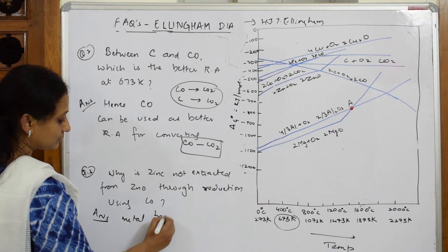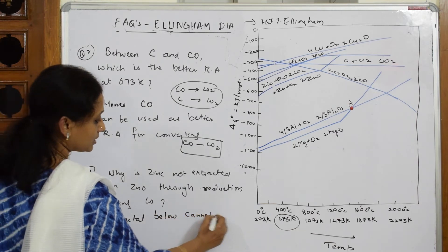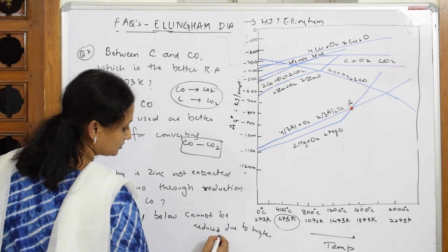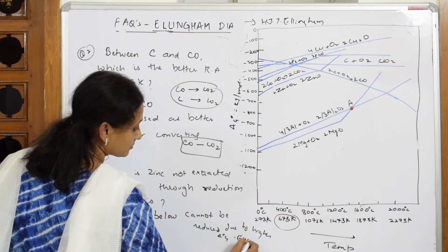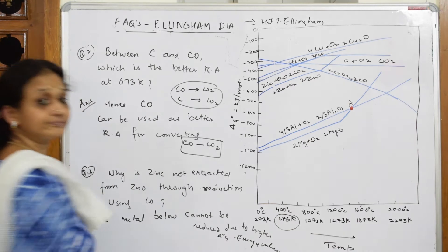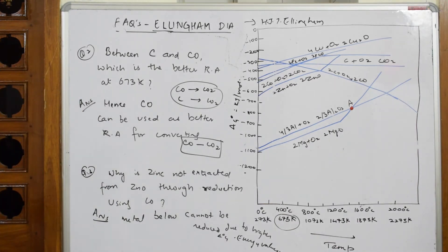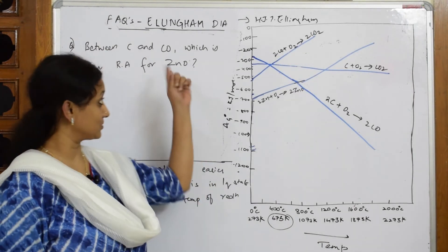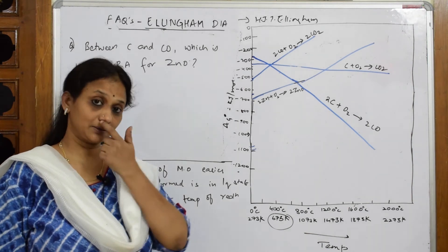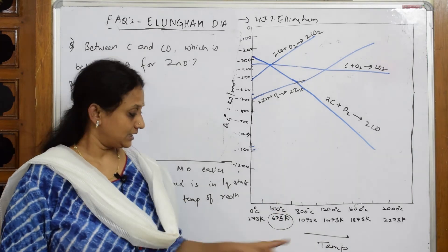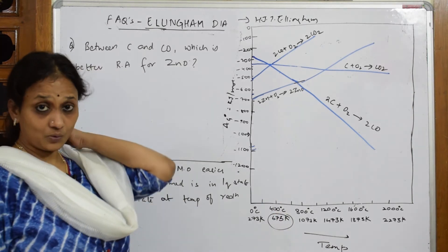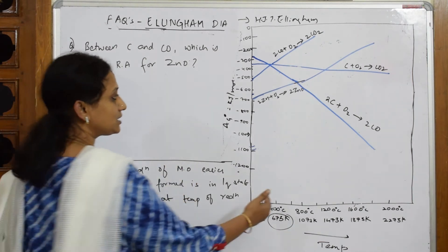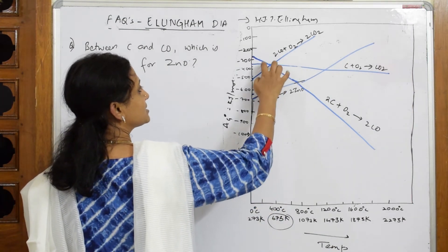Metals below cannot be reduced — also due to higher Gibbs free energy values. That is your answer. Now, earlier I did a question comparing carbon or carbon monoxide at a specific temperature — that was 673 Kelvin. But what happens if no temperature is mentioned in the question? Earlier, when the temperature was given, I compared lines at that point.